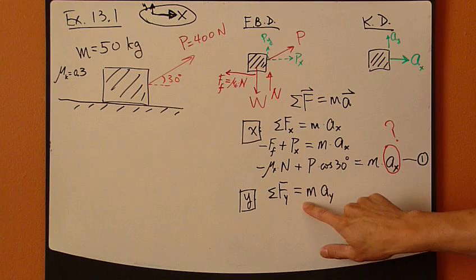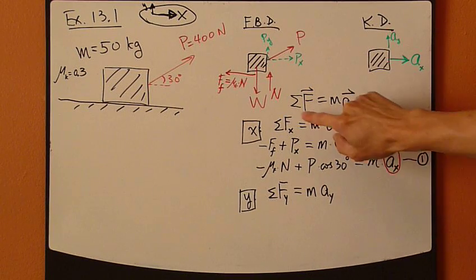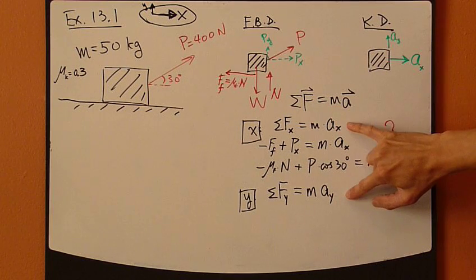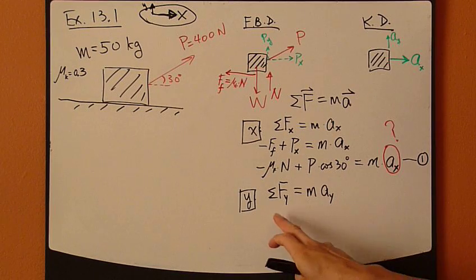Just keep in mind, this equation, this equation right here, there are scalar equations now. There are no more arrowheads. So, they're just simple numbers for each term.